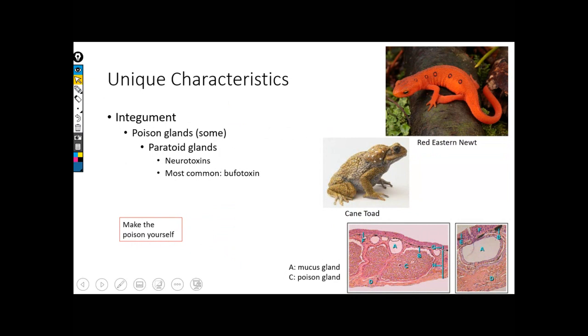All right, so let's take a peek at the different types of glands that we find inside our integumentary system, inside the skin. So remember that not all amphibians have poison glands. But when we do have them, there's basically two kinds that you can have.